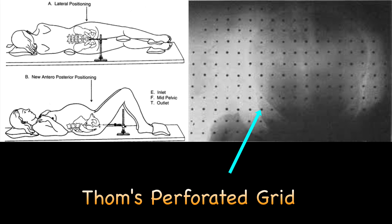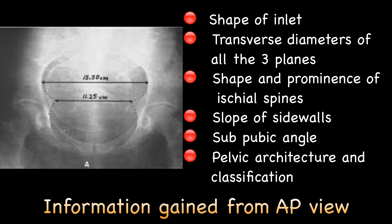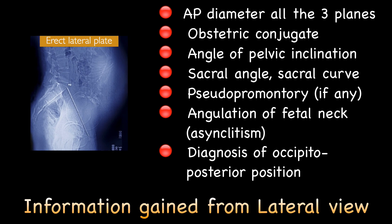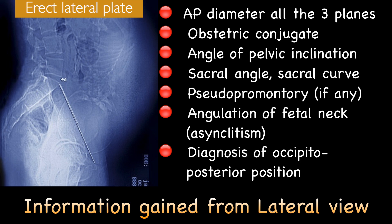The picture of the scale or grid on the X-ray film allows direct measurement without applying a correction factor. The information gained from the antero-posterior view includes: shape of the inlet, transverse diameters of all three planes, shape and prominence of the ischial spines, slope of the side walls, sub-pubic angle, and pelvic architecture and classification. The information gained from the lateral view includes: AP diameter of all three planes, obstetric conjugate, angle of pelvic inclination, sacral angle, sacral curve, pseudo-promontory if present, asynclitism, and diagnosis of occipital posterior position. Needless to say, the lateral view is more important than the AP view because it gives more important information.